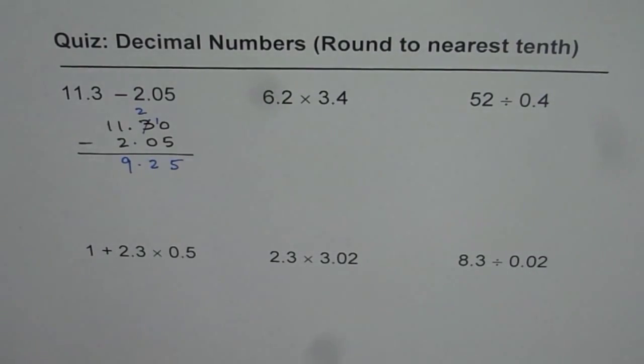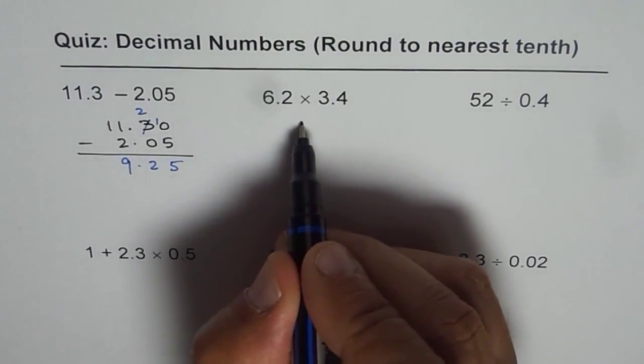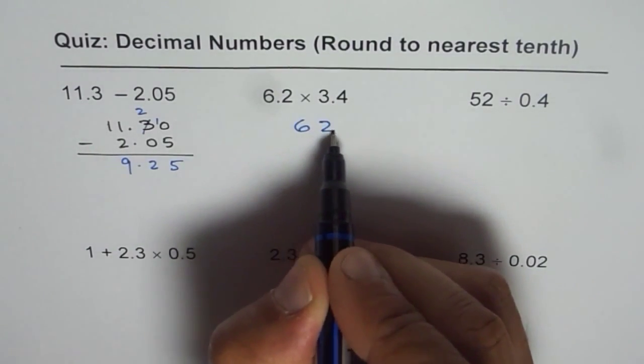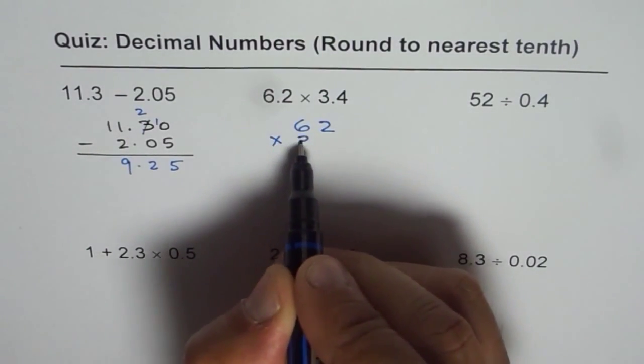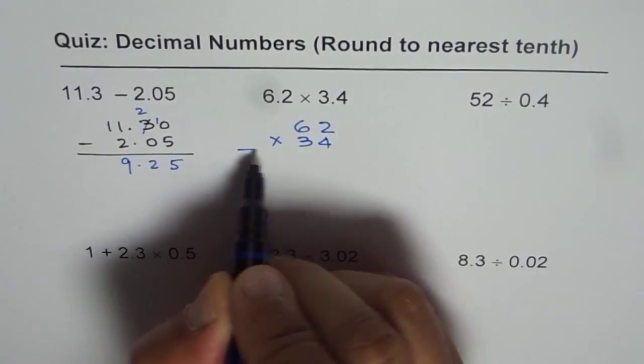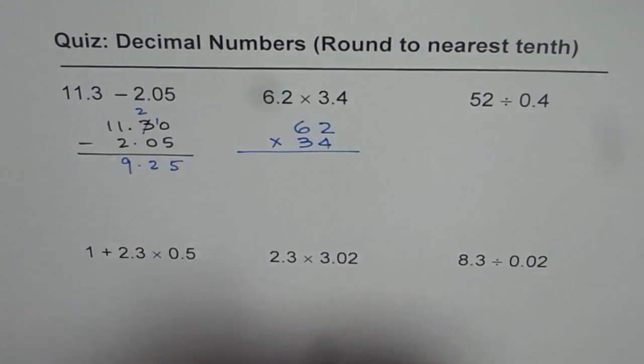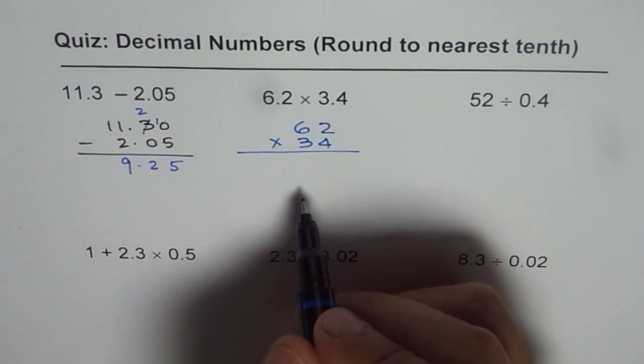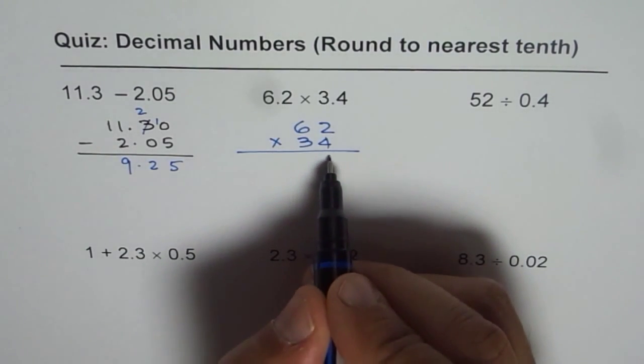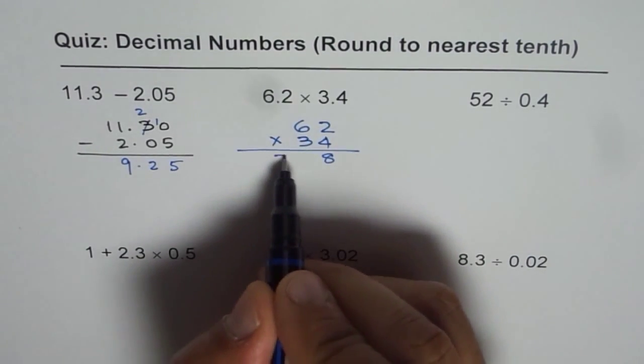Now let's do the next one which is multiplying decimal numbers. So as I said, we just write these numbers without decimals first and then we multiply. Later we will bother about the decimal. So let's multiply without decimals first. 4 times 2 is 8, 4 times 6 is 24.